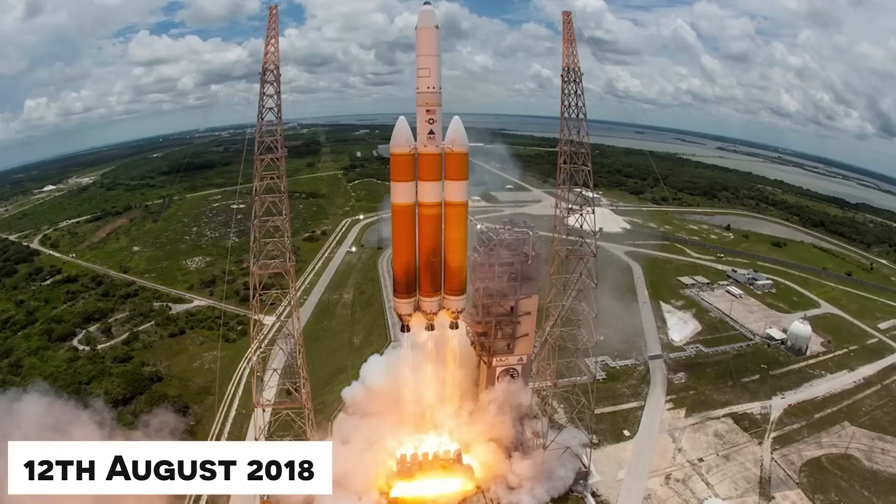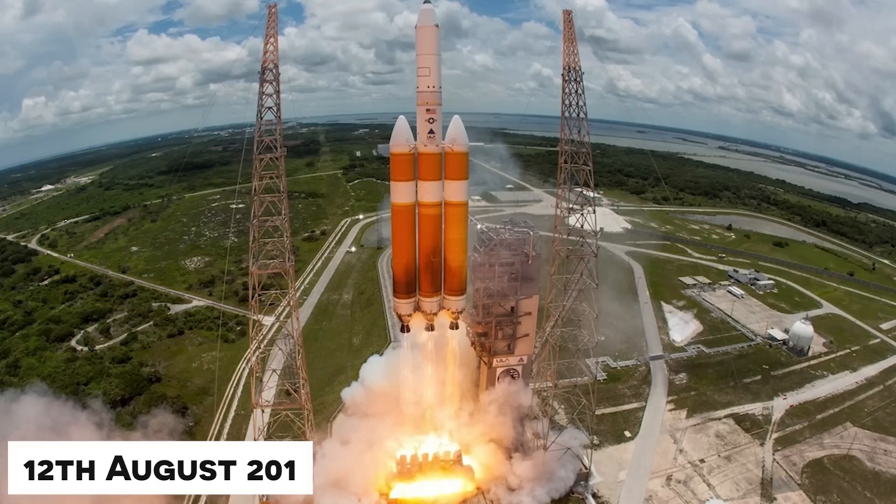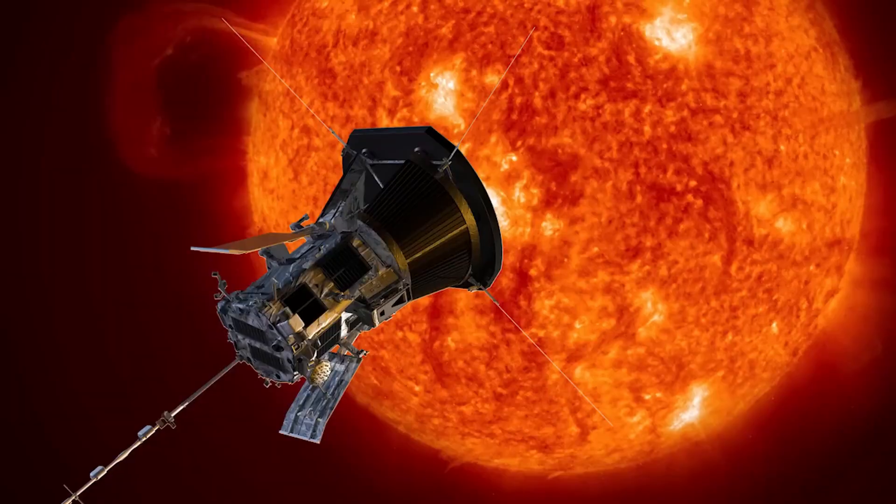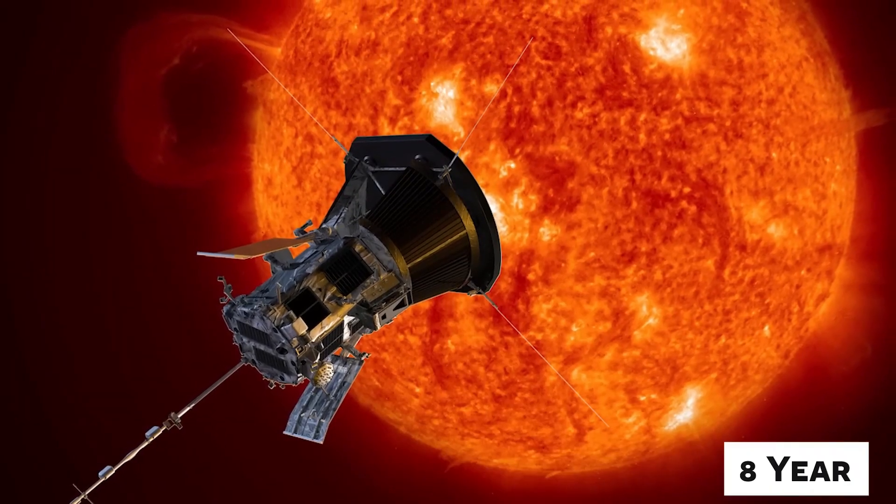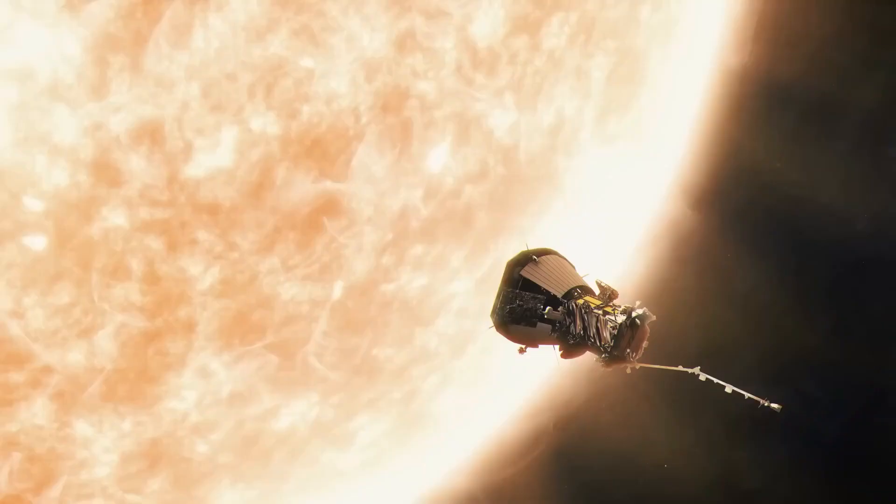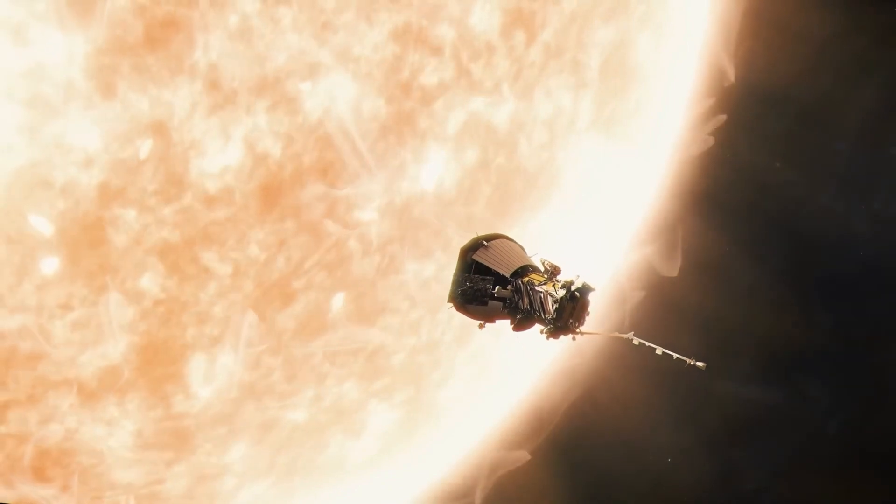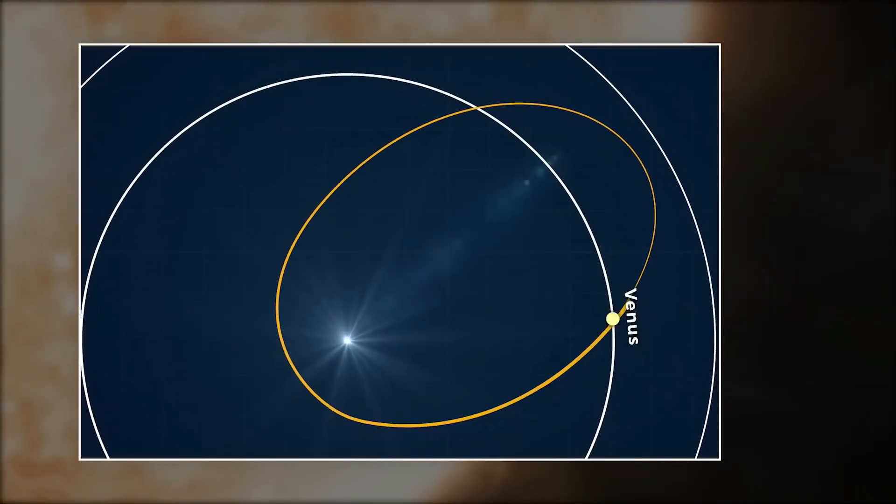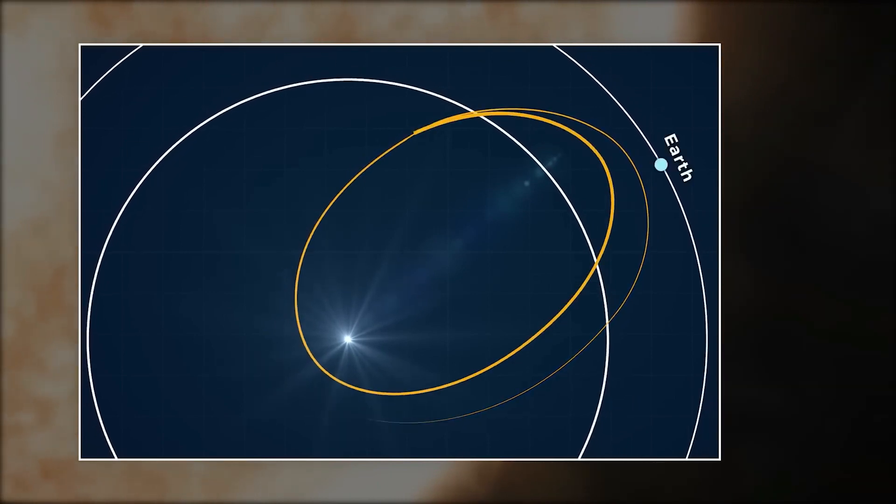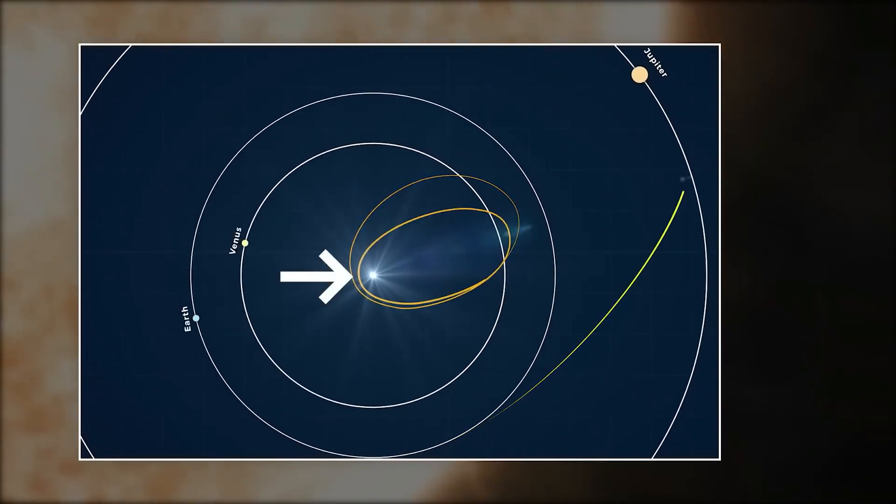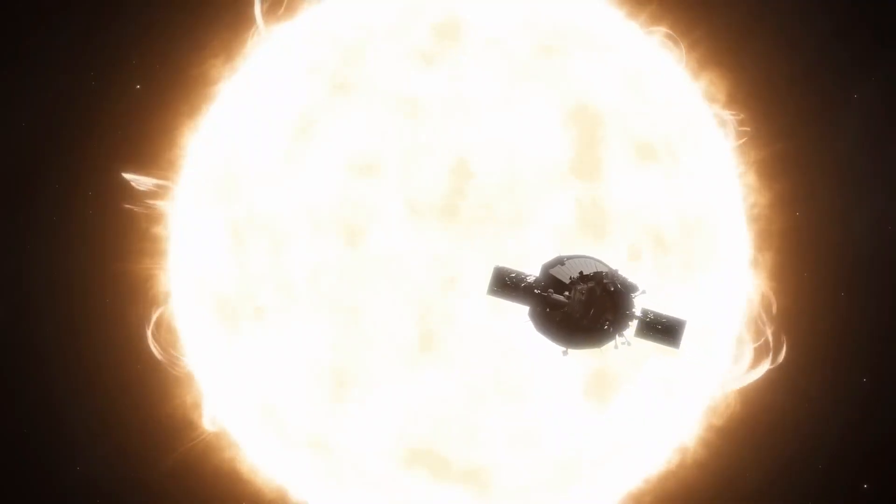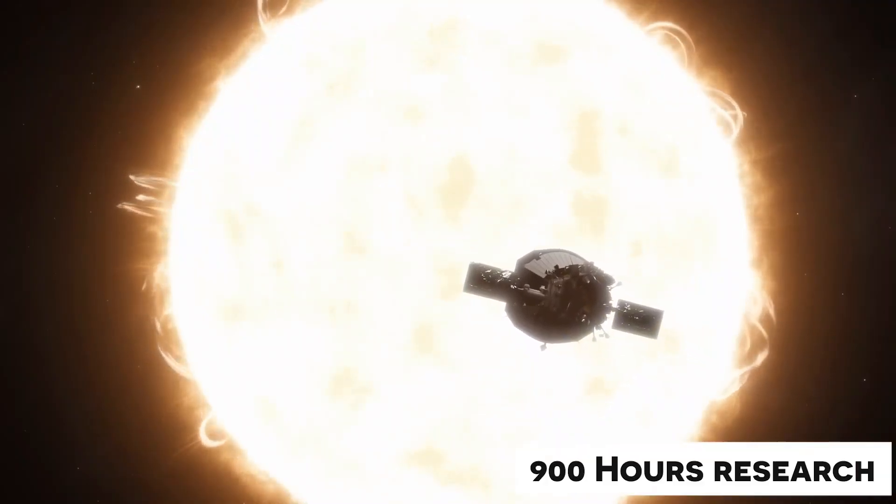On August 12, 2018, the Parker Solar Probe was launched from Cape Canaveral Air Force Station. NASA has planned an eight-year timeline for this mission. To reach the closest point to the Sun, Venus's assistance will be taken 24 times. Each orbit lasts for 37 hours, providing an opportunity to research the Sun. In total, over eight years, this probe will conduct 900 hours of research on the Sun.